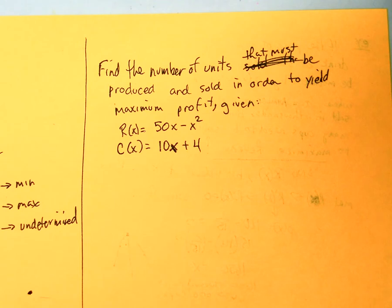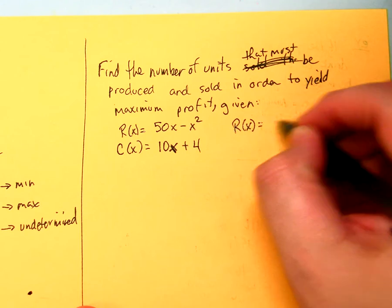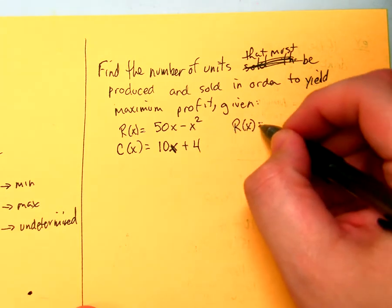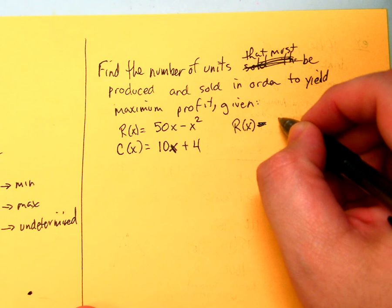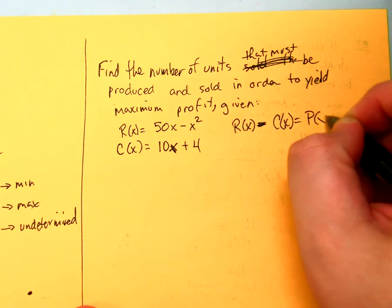Alright, so what's the equation for revenue? R of X, well, R of X minus C of X is equal to your profit.